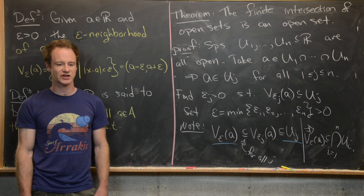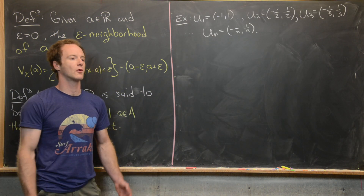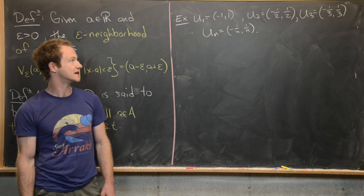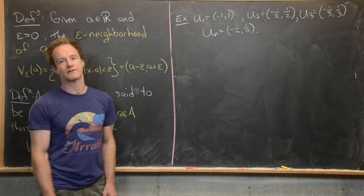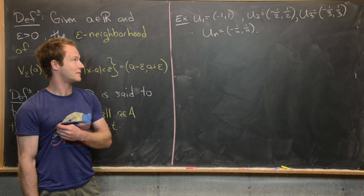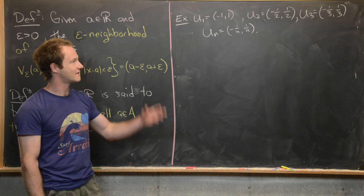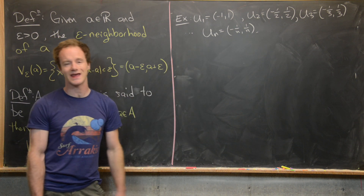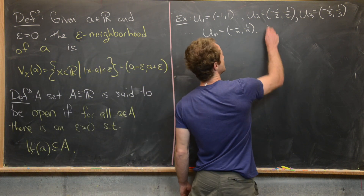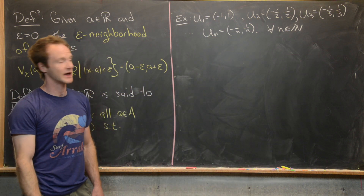Now let's look at a classic example where an infinite intersection of open sets is in fact not open, to illustrate why we need that finiteness condition. Our example uses these open intervals: U_1 = (-1, 1), U_2 = (-1/2, 1/2), and in general U_N = (-1/N, 1/N) for all natural numbers N.